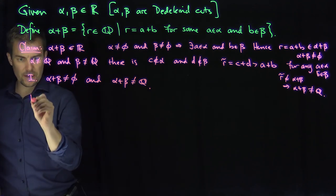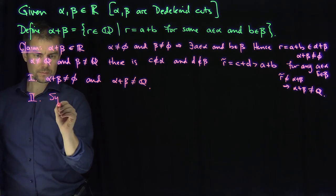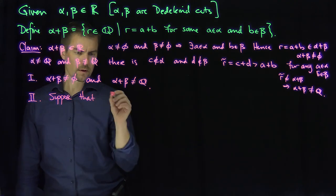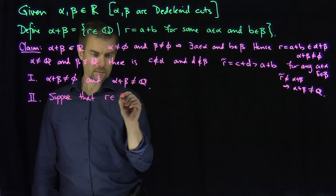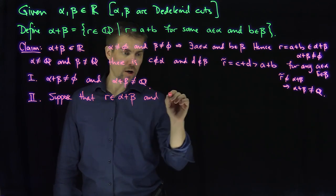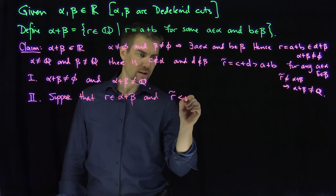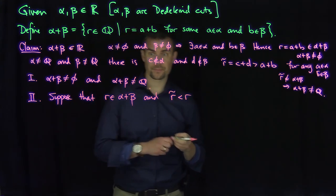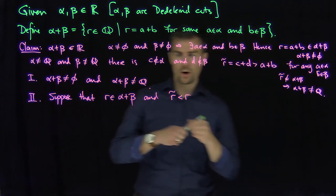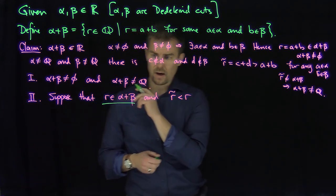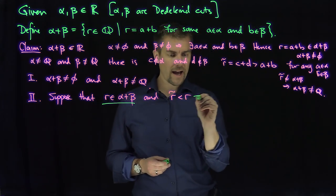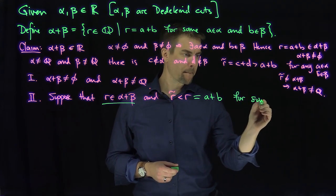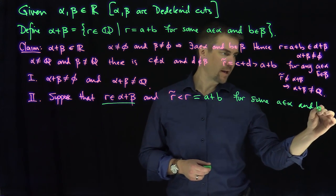The second property for a Dedekind cut is: suppose that r is in the cut and that r-tilde is less than r. I'd like to show that r-tilde is also in the cut. Since r is in alpha plus beta, r has to be of the form a plus b for some a in alpha and b in beta.